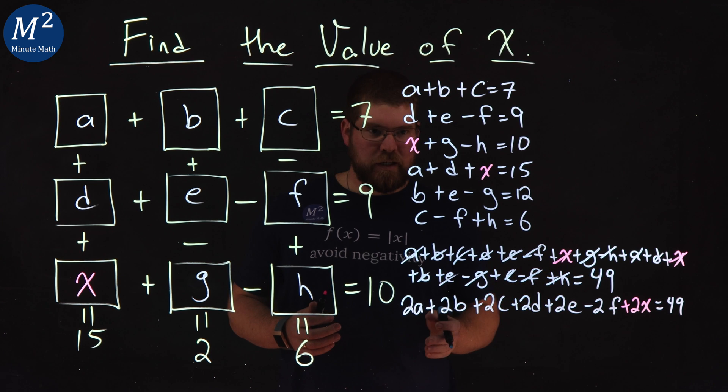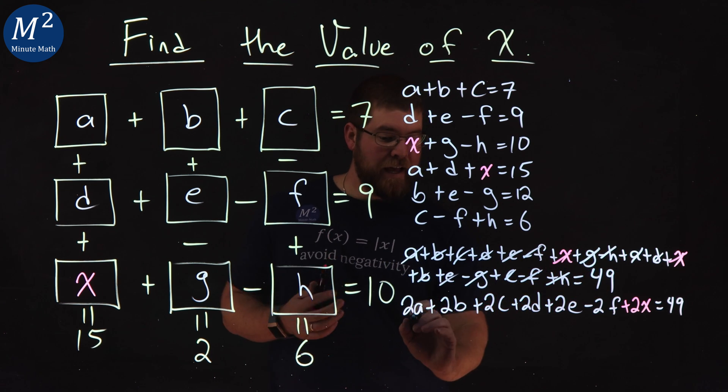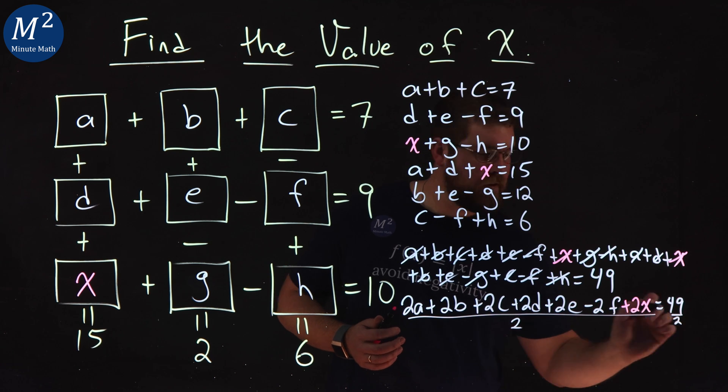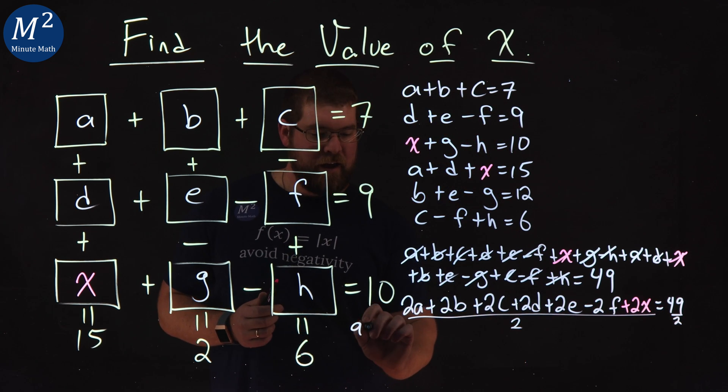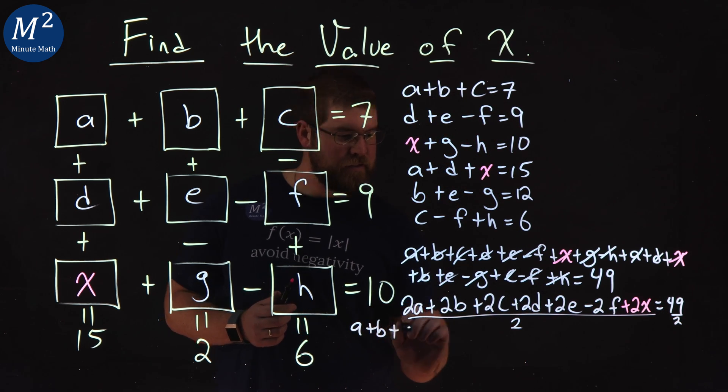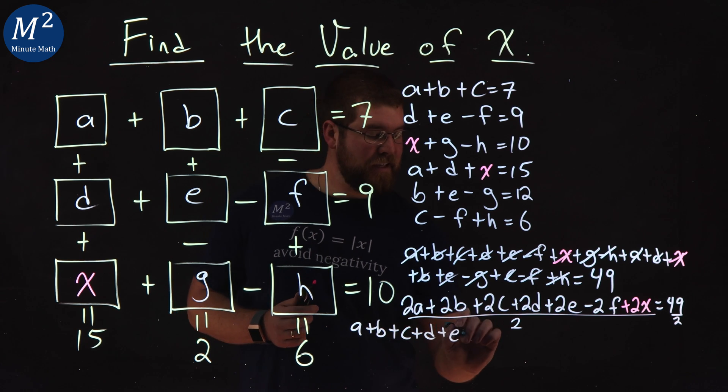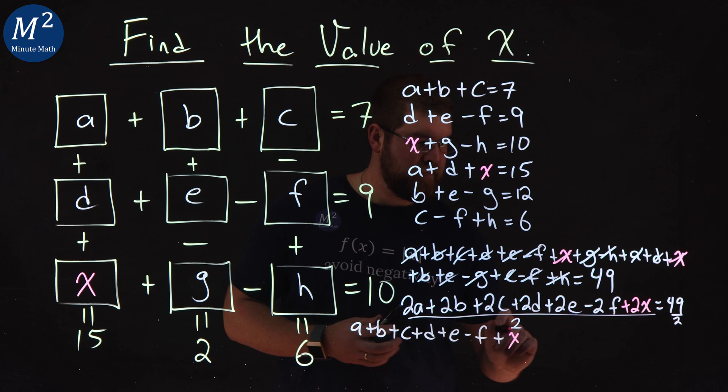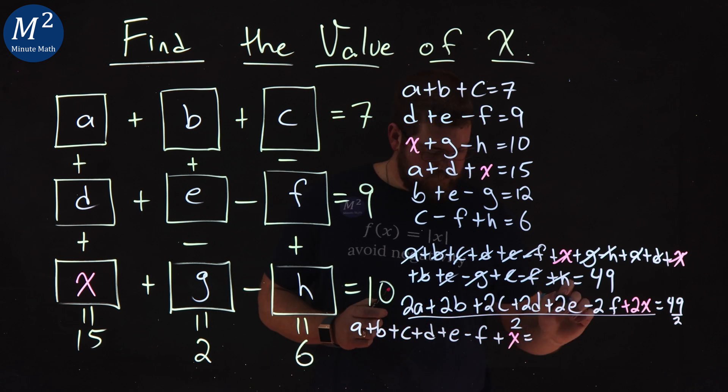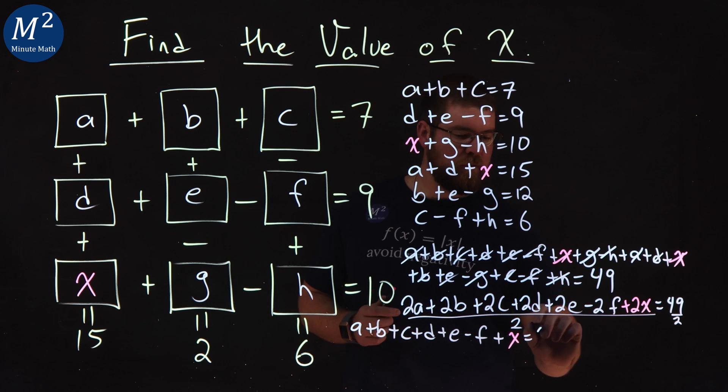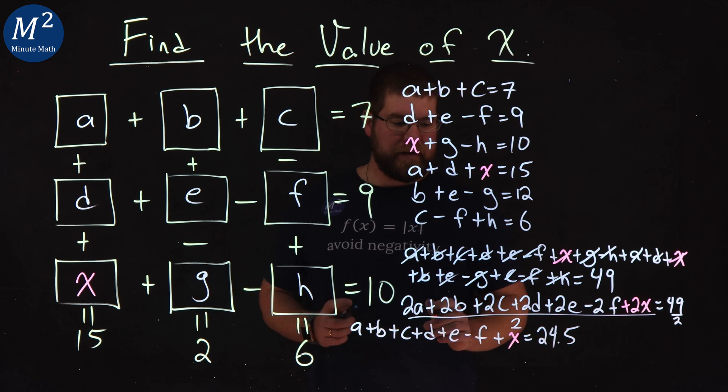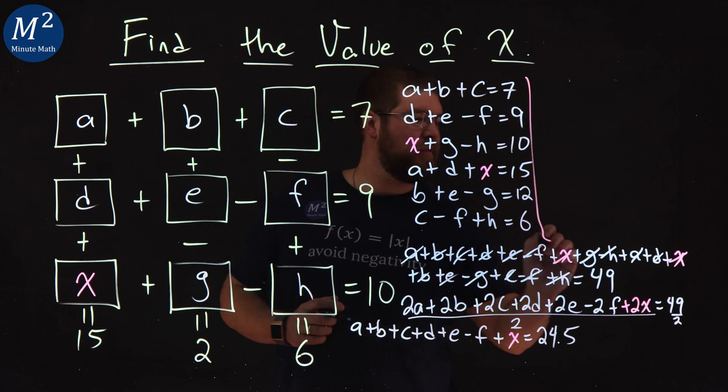Now, I've got a lot of 2s here. Each one's 2. So if I divide everything on both sides of the equation by 2, it's a little simpler. We have A plus B plus C plus D plus E minus F plus an X is equal to 49 divided by 2 is a 24.5. Hopefully, I'm still on the board here. All right. I'll probably fit this in right here.